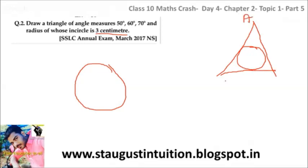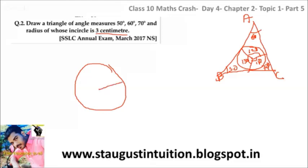This is triangle ABC — this is the rough figure. The angles are 50 degrees, 60 degrees, and 50 degrees. We are connected to the center. Step 1: draw a circle with radius 3 cm. This is the center. Then the angle at center is 50 degrees. The protractor reading should be 120 degrees.